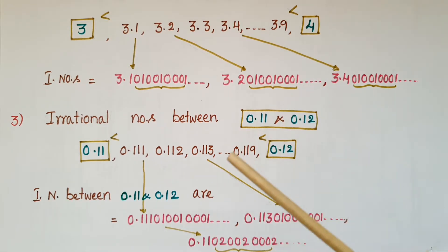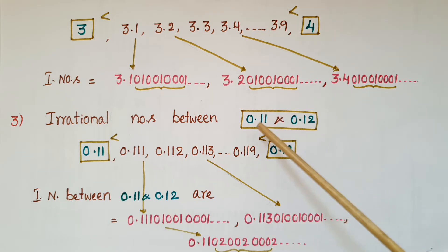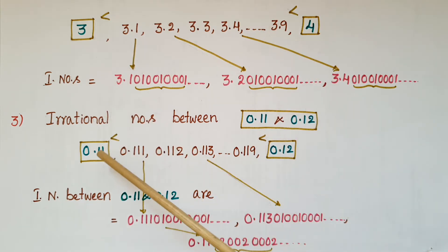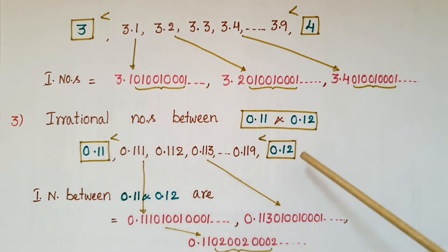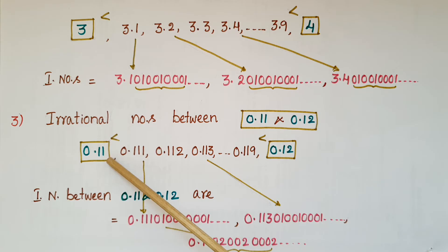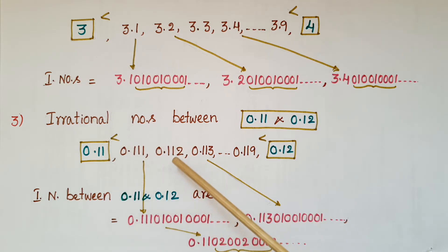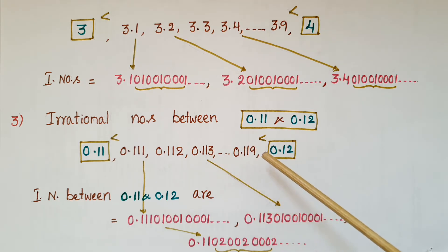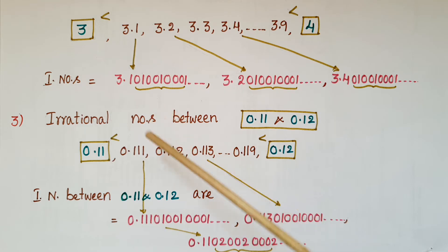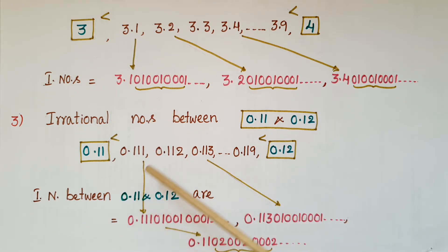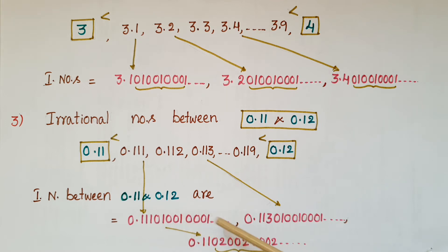Next, to find irrational numbers between two decimal numbers like 0.11 and 0.12: the irrational numbers must be greater than 0.11 and less than 0.12. First write numbers greater than 0.11, such as 0.111, 0.112, 0.113, and so on — these are rational numbers. By using these, we can write irrational numbers like 0.11101001000100001... and so on. These become irrational numbers, and similarly we can write more.